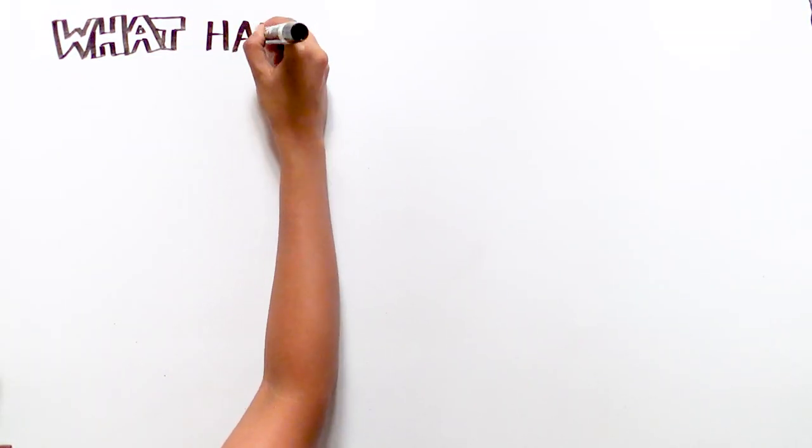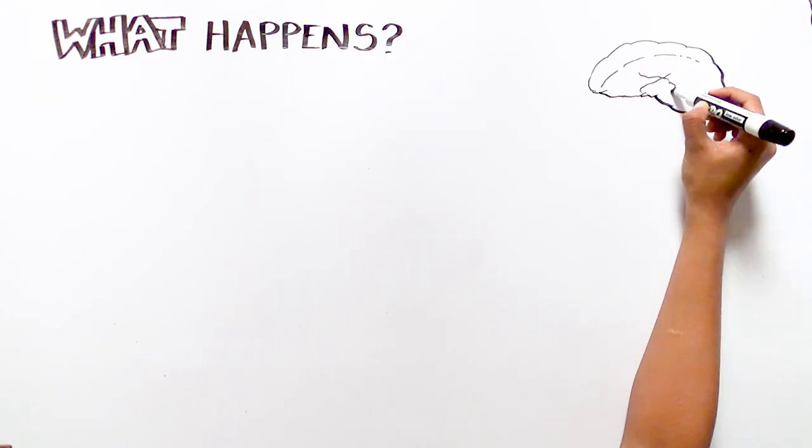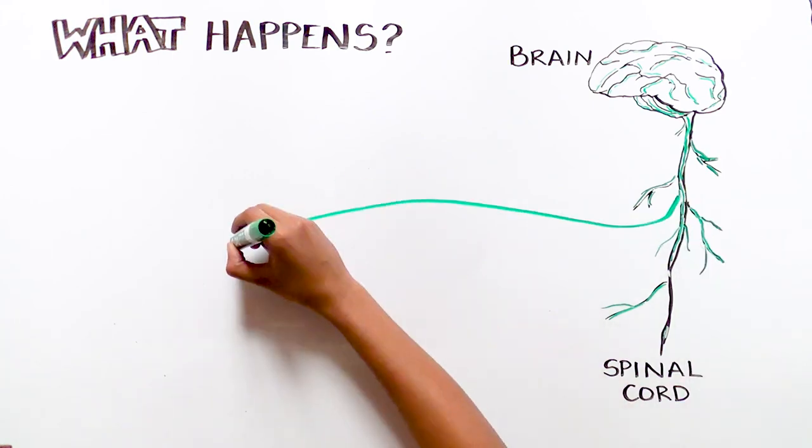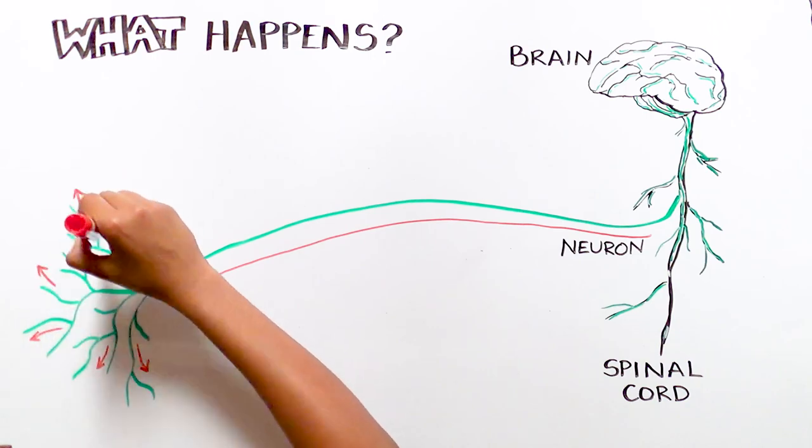What exactly happens to the brain and spinal cord in patients with multiple sclerosis? The brain and spinal cord are made up of neurons, a type of cell that delivers information from the brain to the spinal cord and then to the rest of the body.